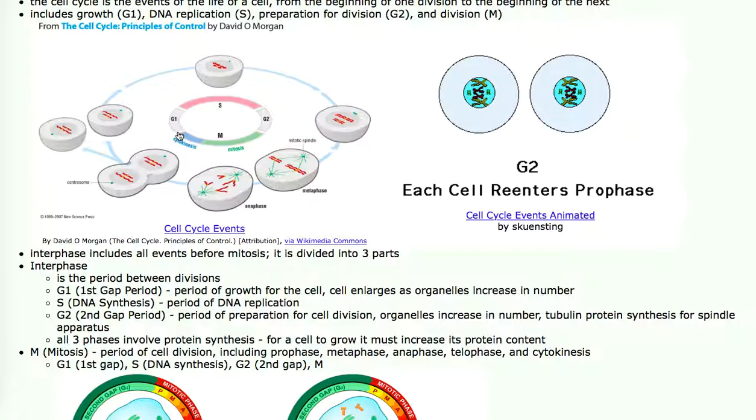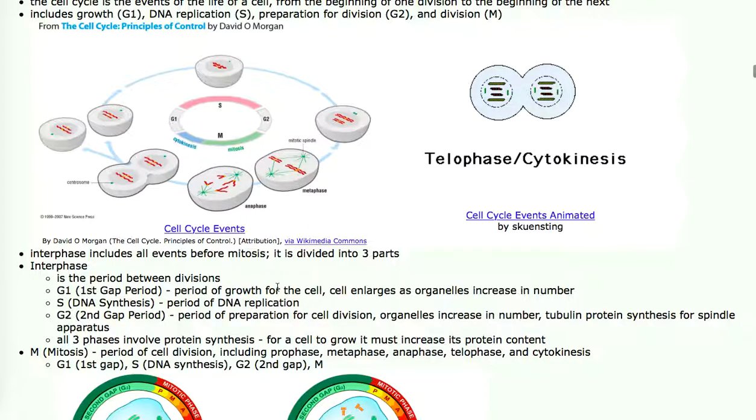Interphase is defined as G1, S, and G2 all combined. During G1, S, and G2, the cells all look the same. You can't tell them apart. You cannot look at a G1 cell and say that's a G1 cell. The only way to test whether it's G1 would be to test the chromosomes to find out if they're replicated or not. During the S phase, the chromosomes get replicated. Then during G2, you have replicated DNA. That's the only difference, and you cannot see that with a microscope. You can see cells that are in M.